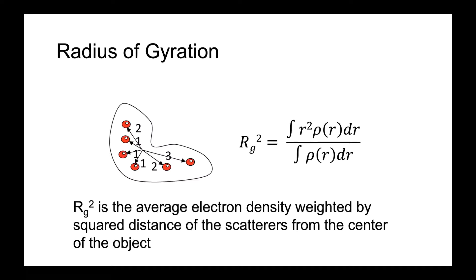The radius of gyration is the average electron density weighted by the squared distance of the scatterers from the center of the object. You're essentially looking at all the different scattering centers and taking their weighted average distance to the center. The radius of gyration is essentially an approximation of your particle size, which is very useful. Its formalism is an integral of that electron density function as a function of distance.